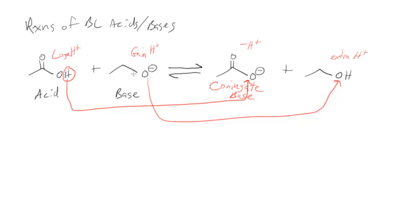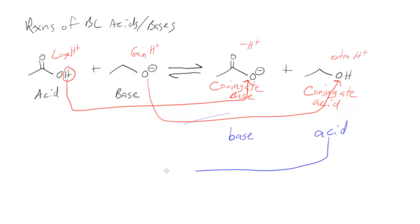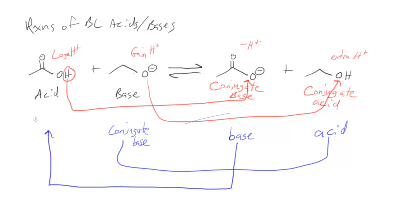Then we have the base that we started with, and once that gets protonated, now I have an acid — this one is the conjugate acid of the starting base. So I started with this base, we add a proton to it, now it becomes an acid. If this reaction were to go in reverse, we'd have an acid here and a base, and if this acid is deprotonated it becomes the conjugate base of ethanol, and if I protonate this base I would get the conjugate acid of acetate.